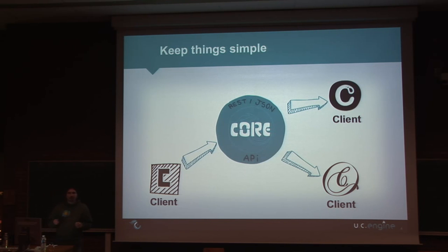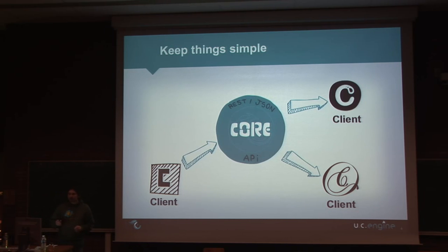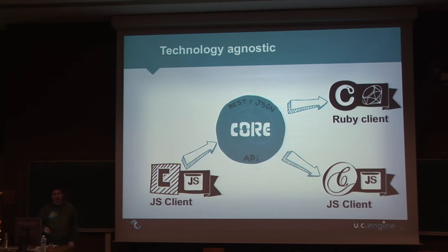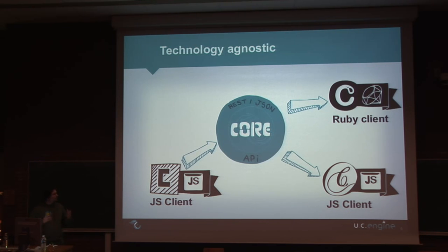UCEngine is built to be developer-friendly, so we really try to keep things simple. We have built a REST API on top of an Erlang core, which uses JSON as the primary data format. And as it's HTTP-based, it's simple and you have tons of libraries to play with. So you're not tied to a specific language because UCEngine has been designed to be technologically agnostic and interoperable — you can use the language you want.